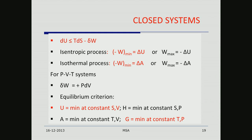For PVT systems, δW = PdV, and the equilibrium criterion becomes U is a minimum at constant S and V. By subtracting −TS from both sides you get the result that A should be a minimum at constant T and V. At constant S and P, H should be a minimum, and G will be a minimum at constant T and P. Because temperature and pressure are the pairs of variables that can be most easily held constant and monitored, A being a minimum and G being a minimum are the important equilibrium equations.